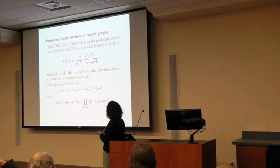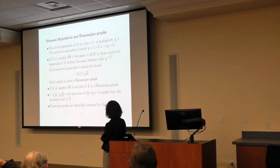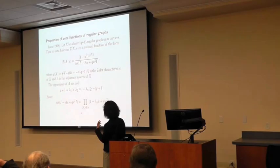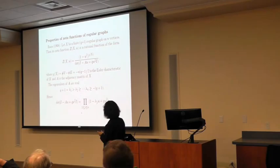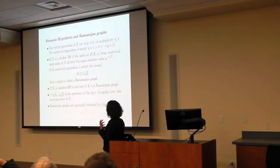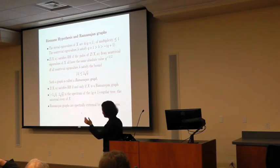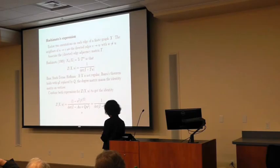We say the zeta function satisfies the Riemann hypothesis if and only if all the non-trivial poles have the same absolute value, which in this case must be q to the −1/2. Going back to the expressions, this tells you the zeta satisfies the Riemann hypothesis if and only if all non-trivial eigenvalues have absolute value bounded by 2√q. Such a graph is called a Ramanujan graph. For a graph, the zeta function satisfies the Riemann hypothesis if and only if the graph is Ramanujan. The meaning of the bound for Ramanujan graphs is that the interval [−2√q, 2√q] is the spectrum of the universal cover.